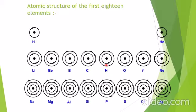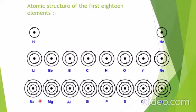Fluorine has configuration 2,7 — two electrons in the inner shell and seven in the outer shell. Neon has configuration 2,8 — two in the inner and eight in the outer shell. Sodium has configuration 2,8,1 — two in the K shell, eight in the L shell, and one electron in the M shell. Magnesium is 2,8,2. Aluminium is 2,8,3. Silicon is 2,8,4. Phosphorus is 2,8,5.